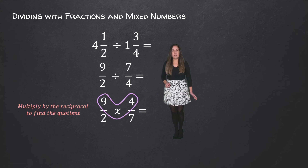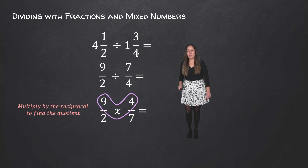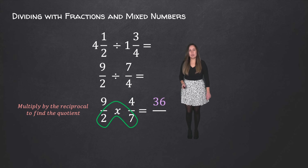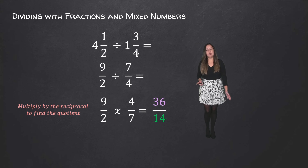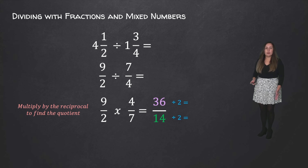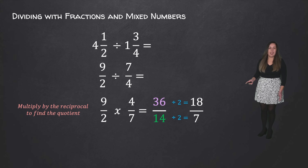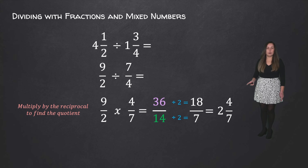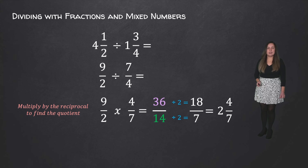Then we're going to multiply the numerator times the numerator: 9 times 4 is equal to 36. And then we're going to multiply the denominators: 2 times 7 is equal to 14. Now 36 and 14 are both even numbers, so we can simplify by dividing both the numerator and the denominator by 2. 36 divided by 2 is 18, and 14 divided by 2 is 7. Don't forget that we can write this as a mixed number: 18 over 7 is 2 and 4 over 7.